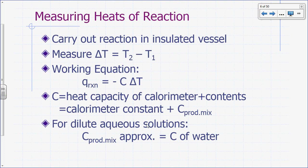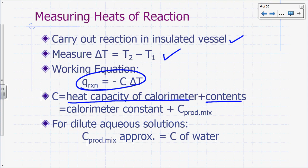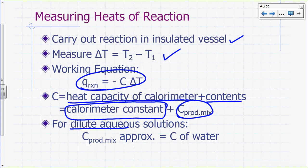To measure heat of reaction, carry out the reaction in an insulated vessel and measure delta T = T2 − T1. Your working equation is: heat of reaction = −C × delta T. C is the heat capacity of the calorimeter and its contents — the calorimeter constant plus the heat capacity of the product mixture. For reactions in dilute aqueous solutions, the heat capacity of the product mixture is approximately that of the water used.